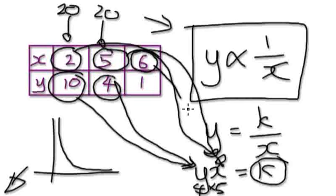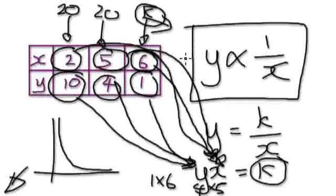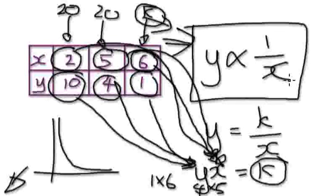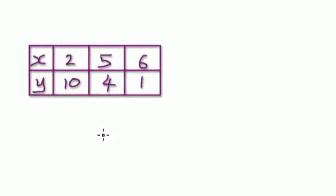Now let's put X equals 6 and Y equals 1, so it's 1 times 6, which is 6. This K is a different K. So here you cannot say that Y is inversely proportional to X, because if Y is truly inversely proportional to X, then all these products should be the same — but they're not.